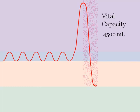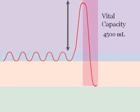When we take a huge breath in, as much as we can, followed by blowing out all that we can, that is called vital capacity. It is the inspiratory reserve volume plus tidal volume plus expiratory reserve volume, totaling around 4500 to 5000 milliliters.